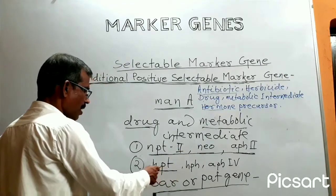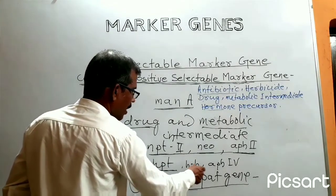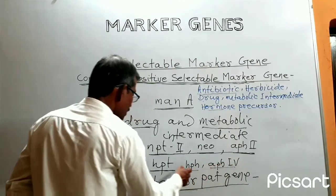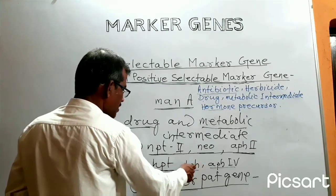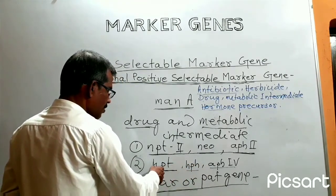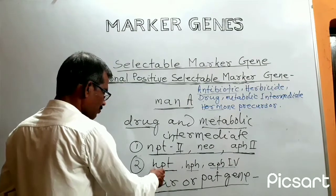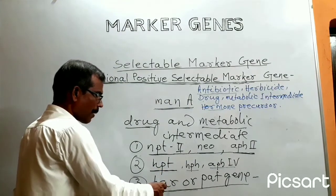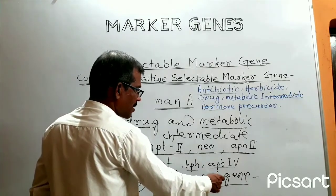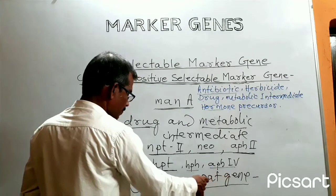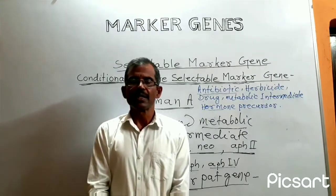Another widely used marker gene system is HPT, also known as HPH or APS4. This gene system provides resistance to the antibiotic hygromycin B, and codes for the enzyme hygromycin phosphotransferase. The third example is the BAR or PAT gene system, which generates resistance to the herbicide phosphinothricin, and codes for the enzyme phosphinothricin acetyltransferase.